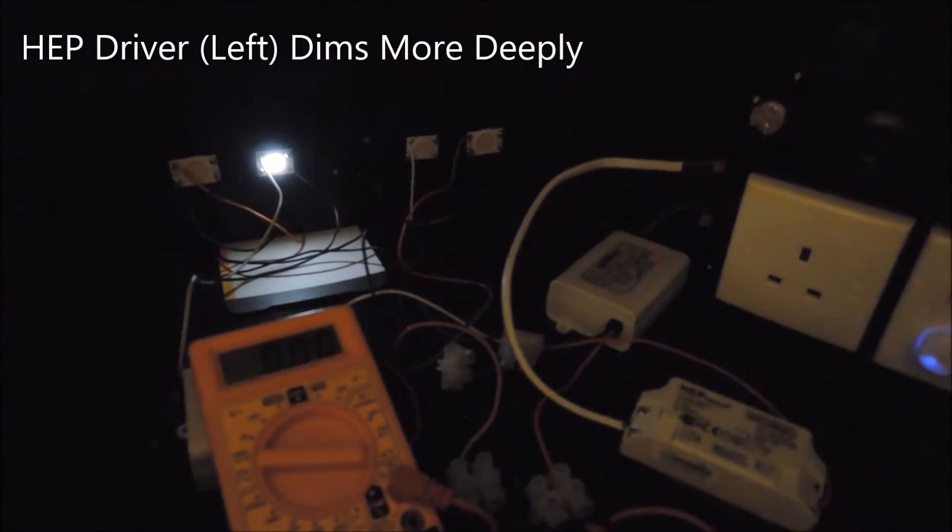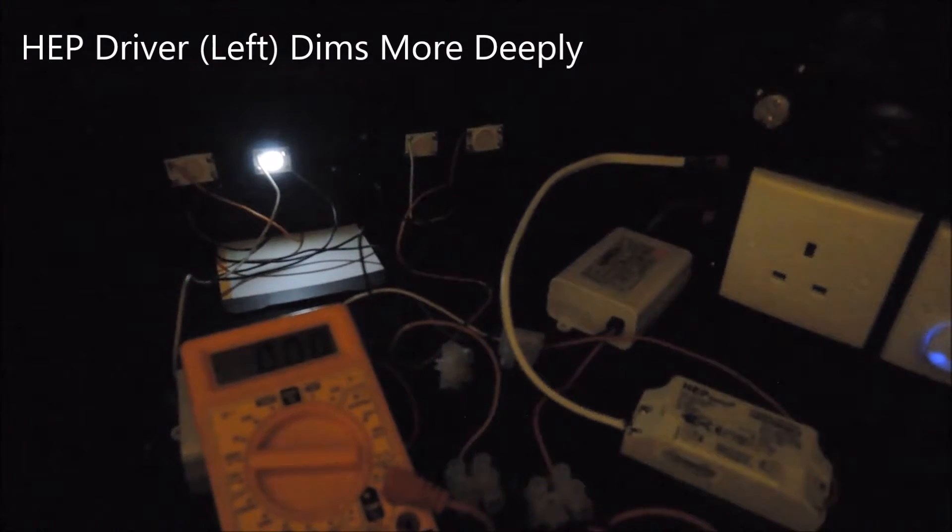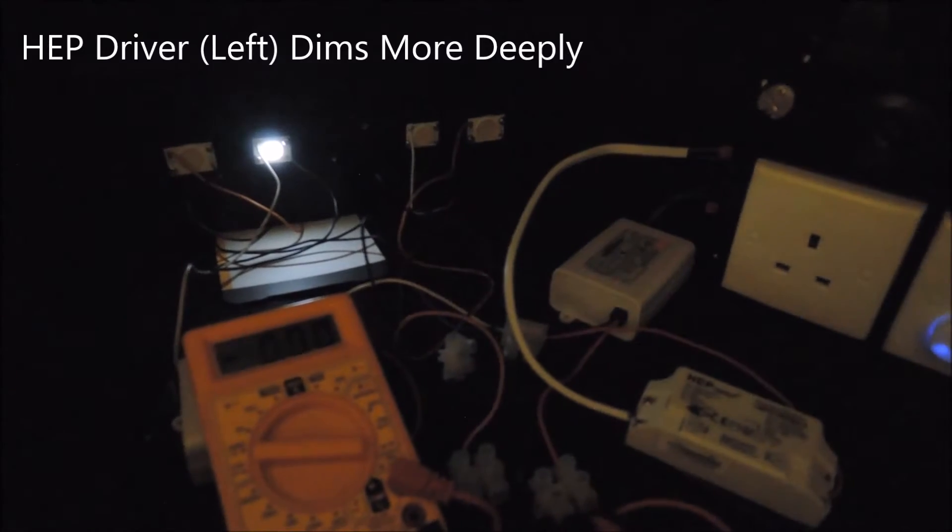In other words, the HEP driver is able to squeeze a little more light from the COB, or we would say the HEP driver is able to dim more deeply than the other driver.